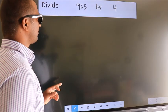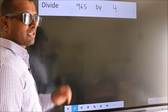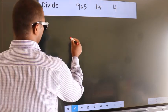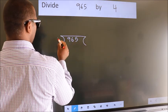Divide 965 by 4. To do this division, we should frame it in this way. 965 here, 4 here.